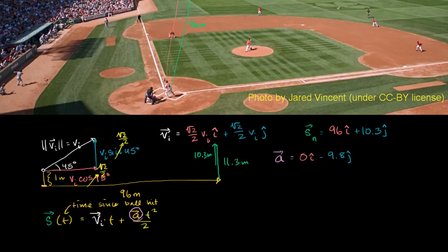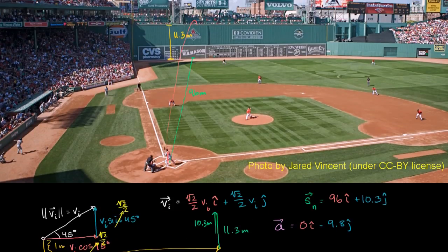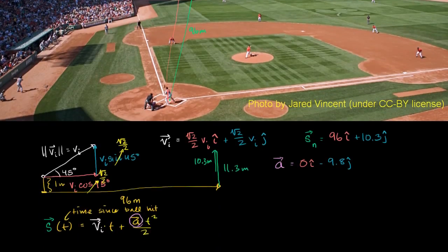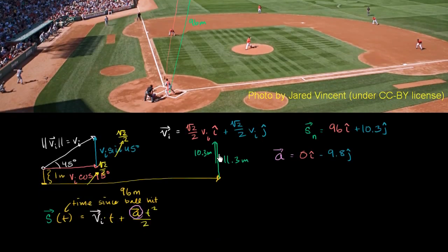Where we left off, we were trying to figure out what the magnitude of our initial velocity needed to be for the ball to clear the Green Monster at Fenway Park, assuming the batter hits it at a 45-degree angle, one meter above home plate. The Green Monster is 96 meters away and 11.3 meters high. So the x displacement is 96 meters, and the y displacement needs to be 10.3 meters — not 11.3, because it's already starting at one meter high.